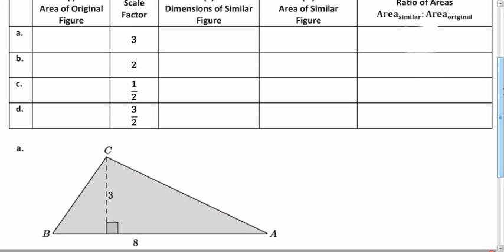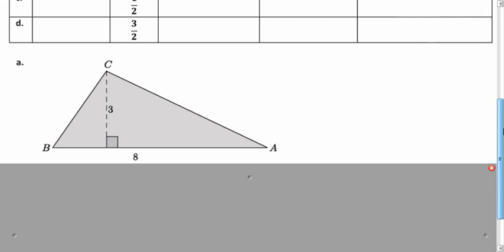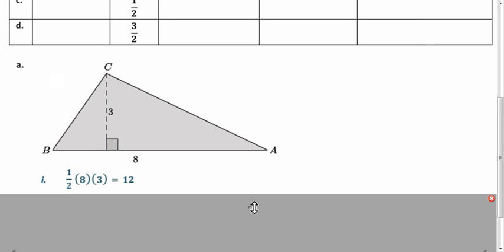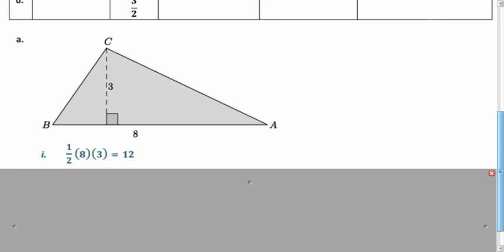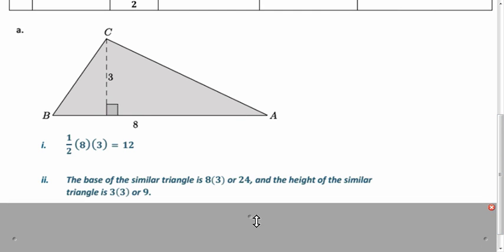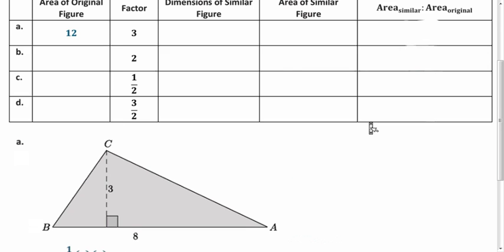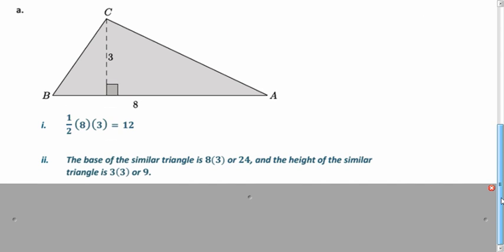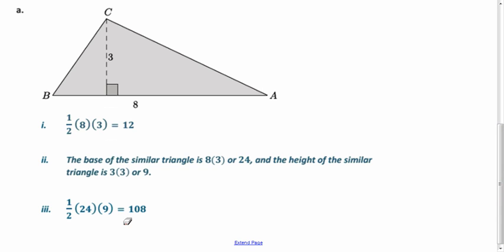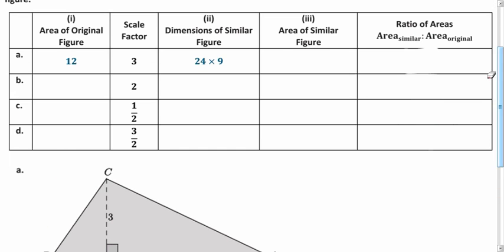Let's try the first part together, the first row, and then you'll try the other three on your own. Here we have a triangle, and we know the area is one-half base times height, so we have 12 square units. In this first box we're going to fill in 12. Now the scale factor is 3, so if we multiply each dimension by 3, we end up with 24 and 9. That's going to go in our next box over here. The area of our new figure is one-half times 24 times 9, which is 108. Finally we compare this area of the similar figure with the original area, which is 108 divided by 12, which gives us 9.